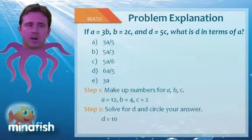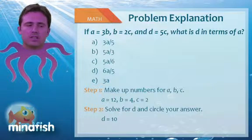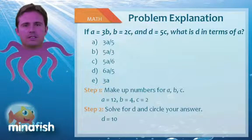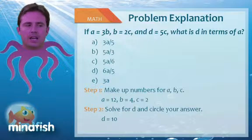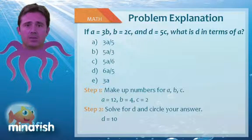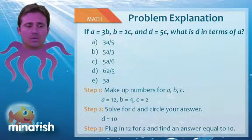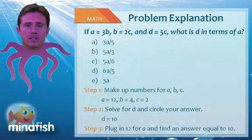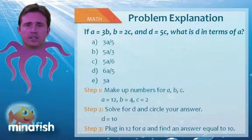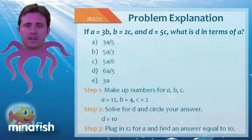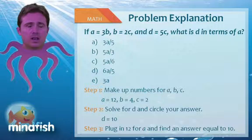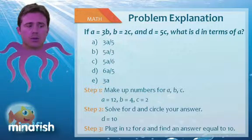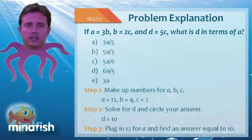Now it says, what is D in terms of A? Relax, in terms of A just means plugging in A. So I'm going to plug in my A, which was 12, and determine which answer is going to give me 10. And the right answer here will be C. 5 times 12 is 60. 60 over 6 gives me 10. Now no matter what numbers you make up, assuming that you follow the constraints of the problem, you will always get answer choice C.